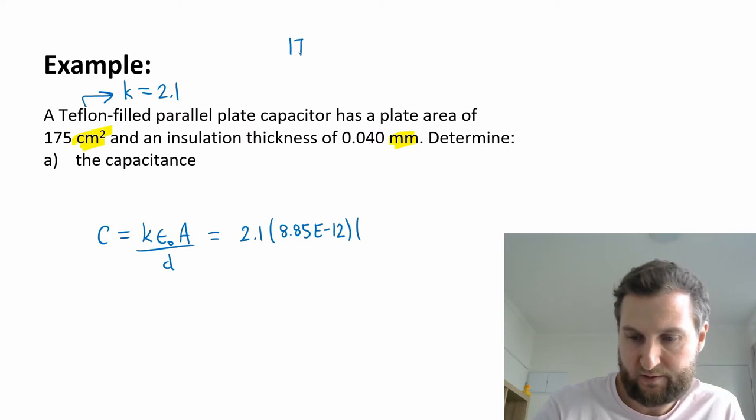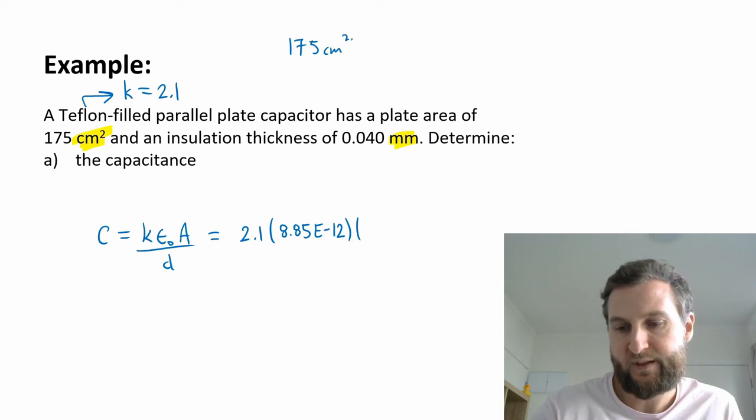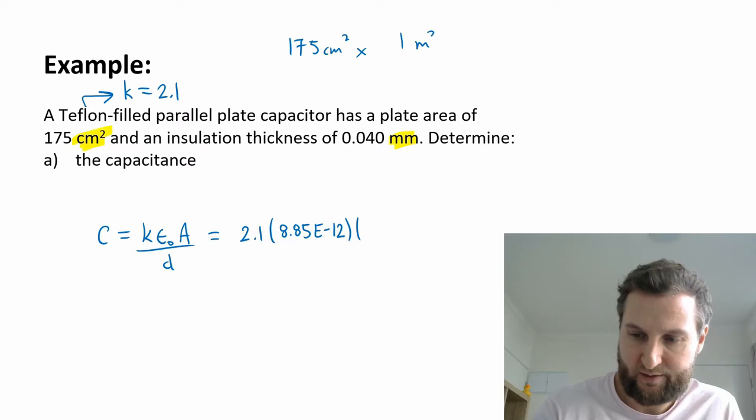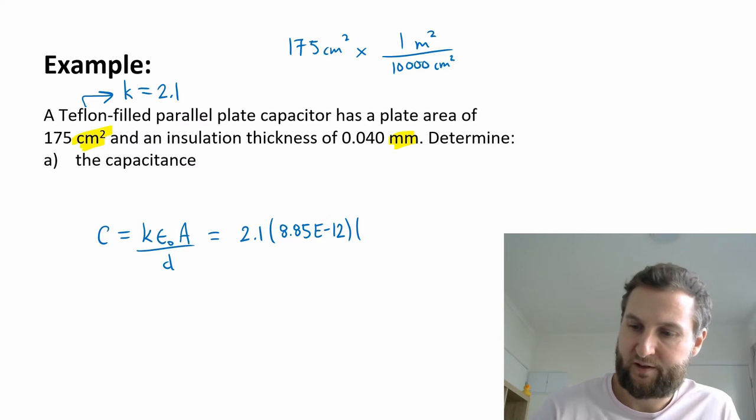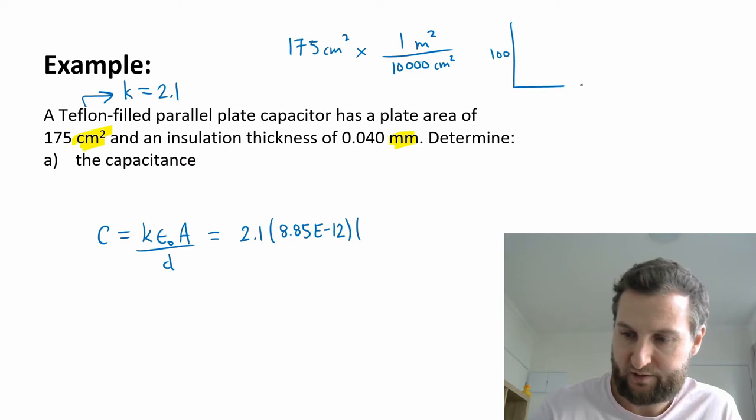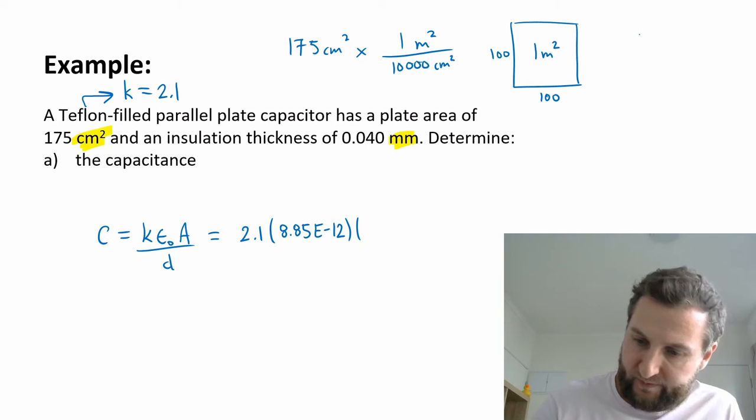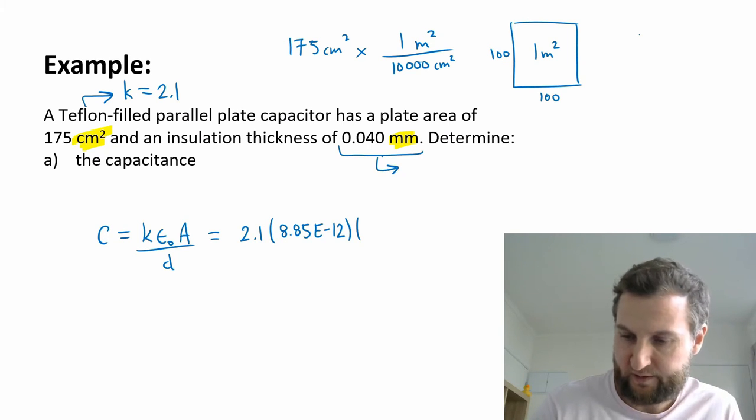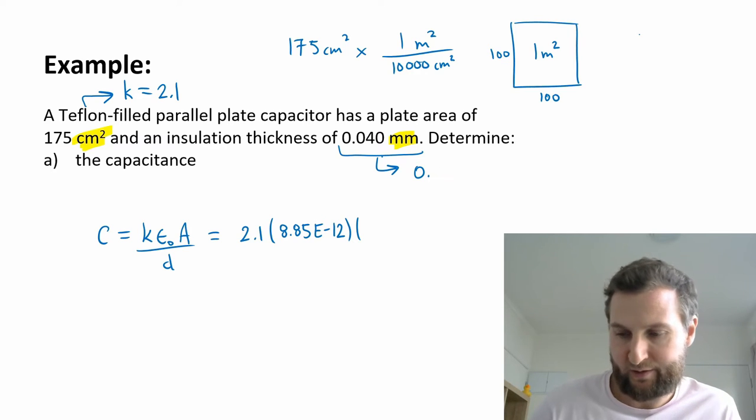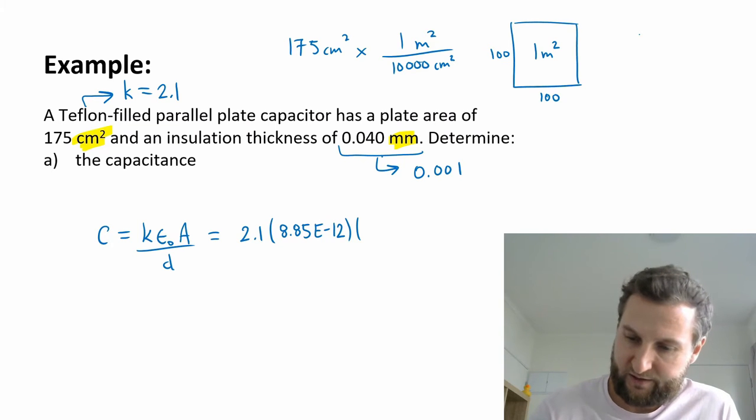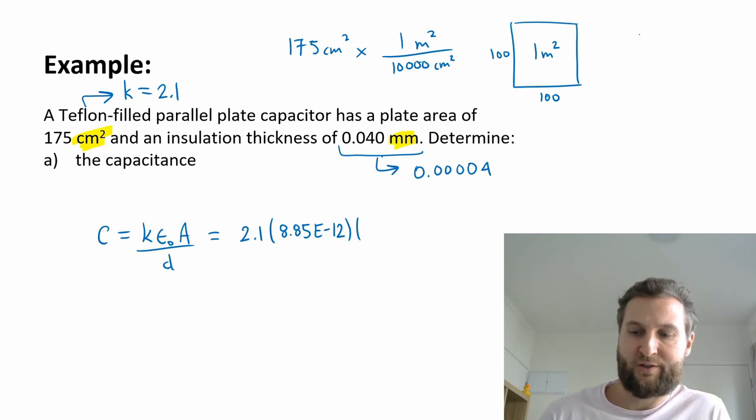175 centimeters squared times 1 meter squared per 10,000 centimeters squared. If you think about a meter, we have 100 centimeters times 100 centimeters, total is 10,000 for 1 meter squared. For my thickness here now, one millimeter is 0.001 or a thousandth of a meter. So this is 0.040. My 0.040 thickness goes to 0.00004.